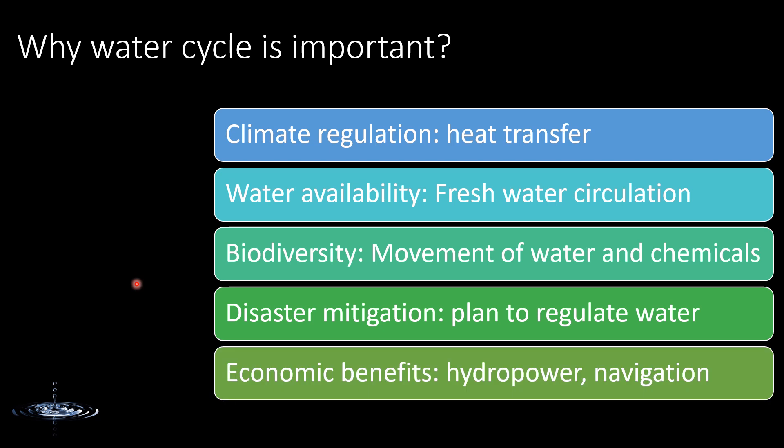Another benefit is the economic benefit. The hydrological cycle provides water at the upstream of catchments, which can be used to generate hydropower — a renewable energy source that depends on the movement of water. We need water in the stream to generate electricity, and the hydrological cycle is the only source of that water. Similarly, navigation is another economic benefit, as water in the river can be used for navigation purposes.